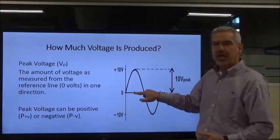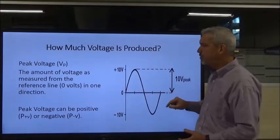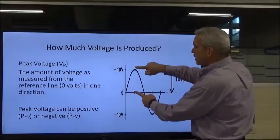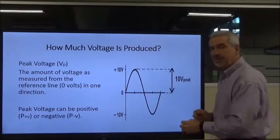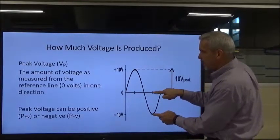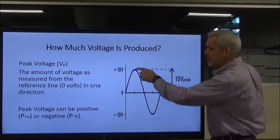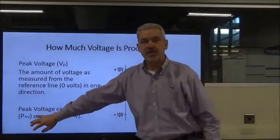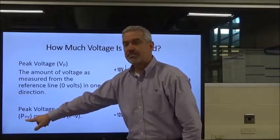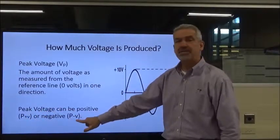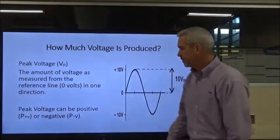Peak voltage is the amount of voltage when we reference it to our zero plane — our zero point. This is the amount of voltage measured from the reference line in one direction; in this case, the positive direction. Peak voltage can also be the amount of voltage measured from the reference line in the opposite direction — the negative voltage. Either one of these is a peak voltage. The peak voltage can be positive or negative, and we write peak voltage as P-sub-plus-V or P-sub-negative-V.